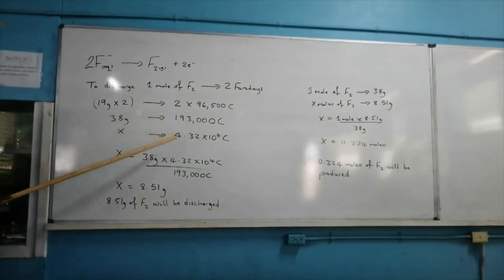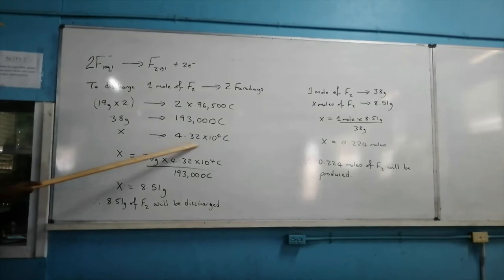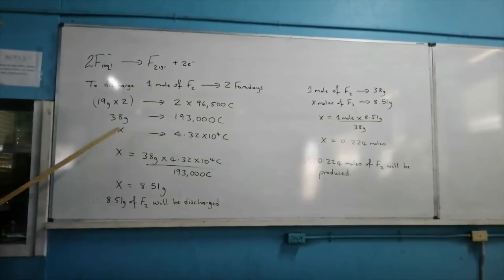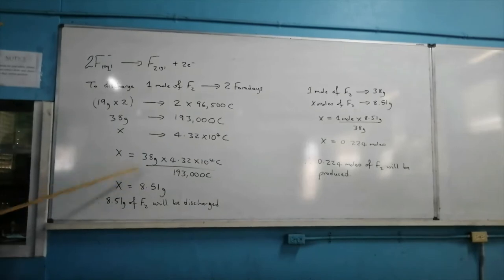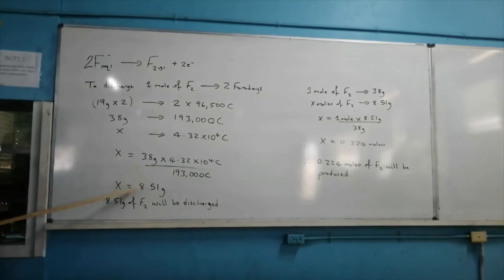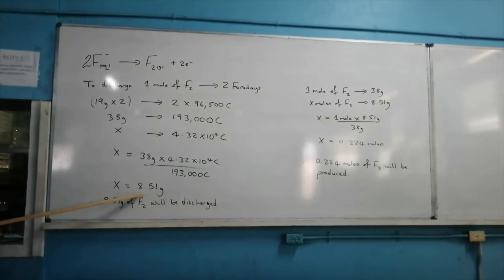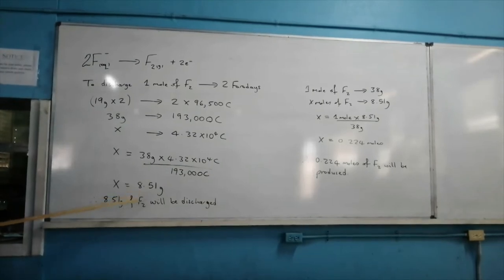However, in the question, 4.32 × 10⁴ coulombs of charge flows through the circuit. So what mass of fluorine will be produced? Once you cross multiply, we get 8.51 grams. Go ahead, do the calculations and you should get this value.